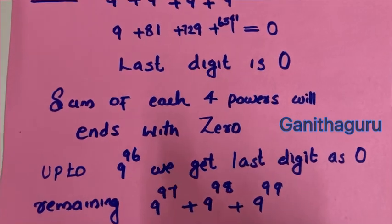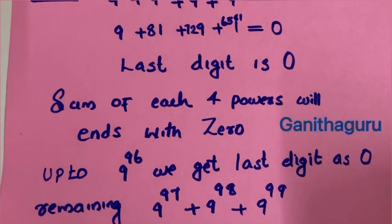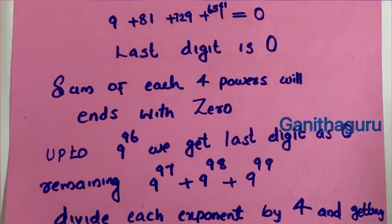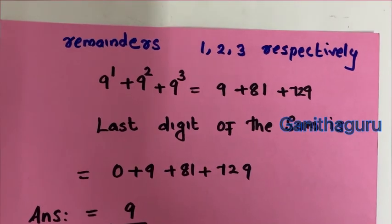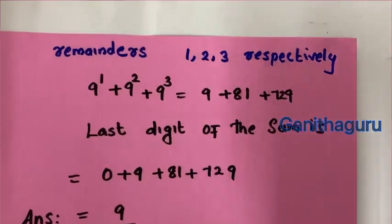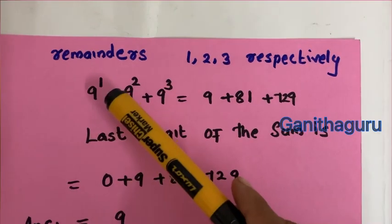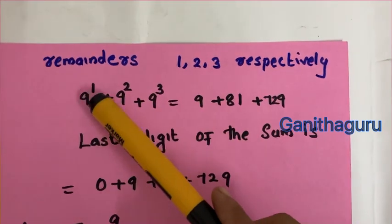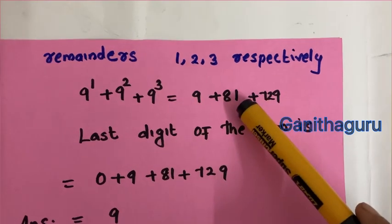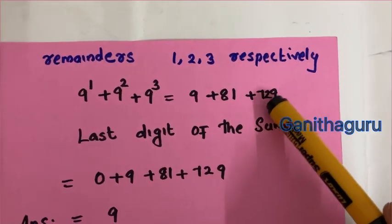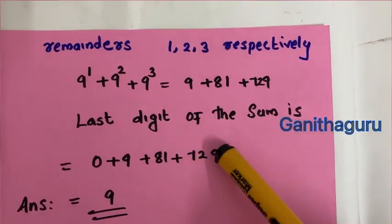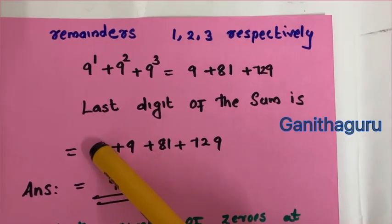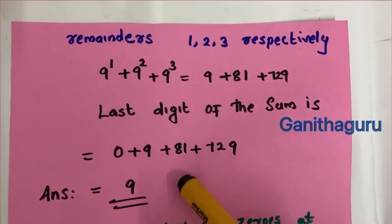For 9 raised to 97, 9 raised to 98, 9 raised to 99: the remainders when divided by 2 are 1, 0, 1 respectively. 9 raised to odd power gives last digit 9, 9 raised to even power gives last digit 1. So last digits are 9, 1, 9. Adding: 9 plus 1 plus 9 gives last digit 9.